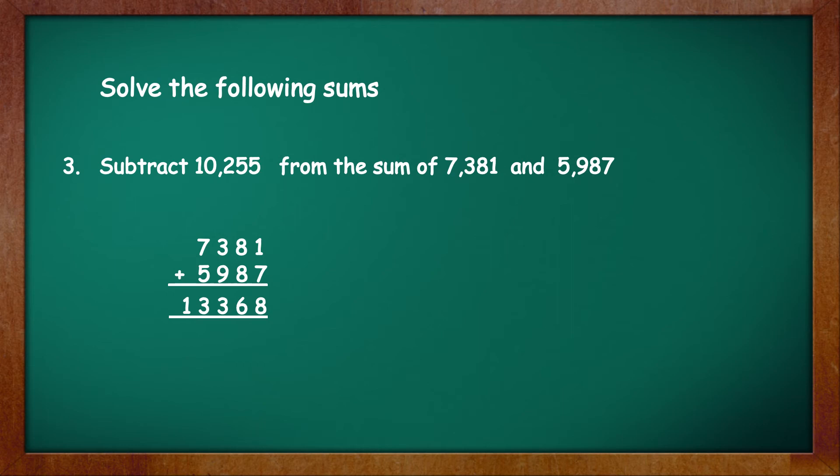Next, from this sum, we will subtract 10,255. So write 13,368 minus 10,255, equal to 3,113. The answer is equal to 3,113.